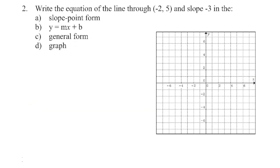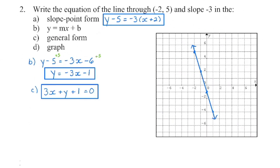We always need two pieces of information. Here they give us the slope and a point. This is not the y-intercept because x is not 0, so I cannot begin in slope-intercept form, and I can never start in general form. So I'm going to begin with slope-point form — pause the video and see if you can get the three different equations and the graph.